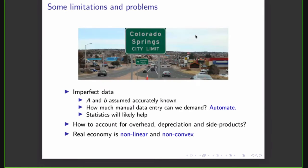So limitations and problems. An obvious one is that data isn't perfect. So we assume here that A and B are accurate, which they probably are not. There's some uncertainty attached. There's also the question of how much manual data entry we can demand of people. But of course, we can try to automate the data entry. So we could have it so you scan the barcode on shipments as they come in. And this makes it unnecessary for people to put that stuff in by hand. And of course, statistics helps here. There is also the question of how to account for overhead and depreciation of machinery, side products and so on. And this is something that Dave has worked on, Dave Zakaria, who is also in here.